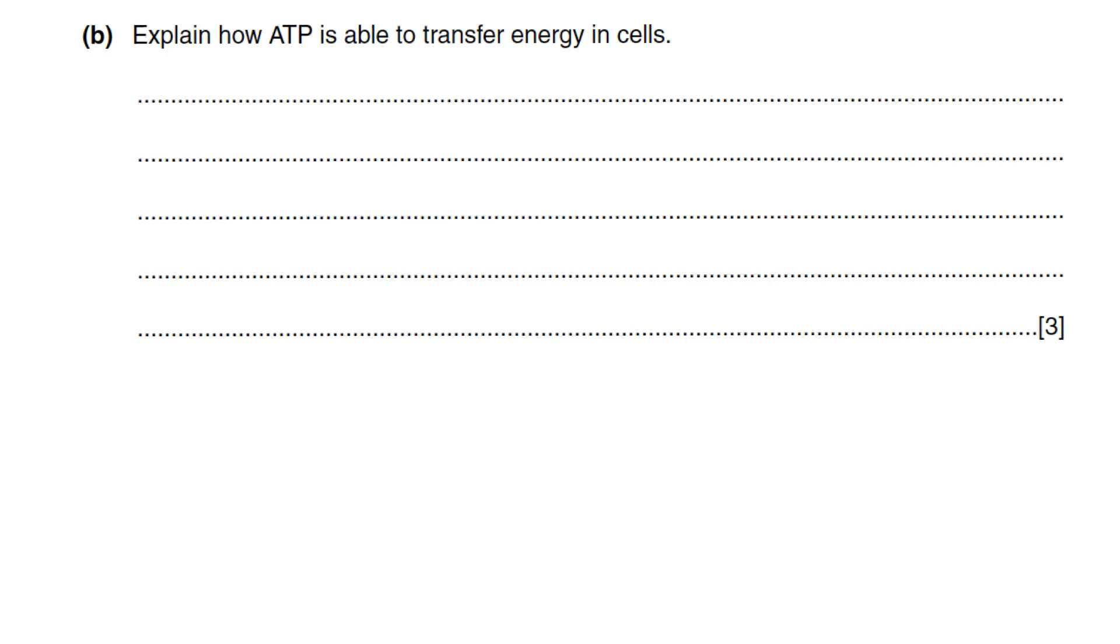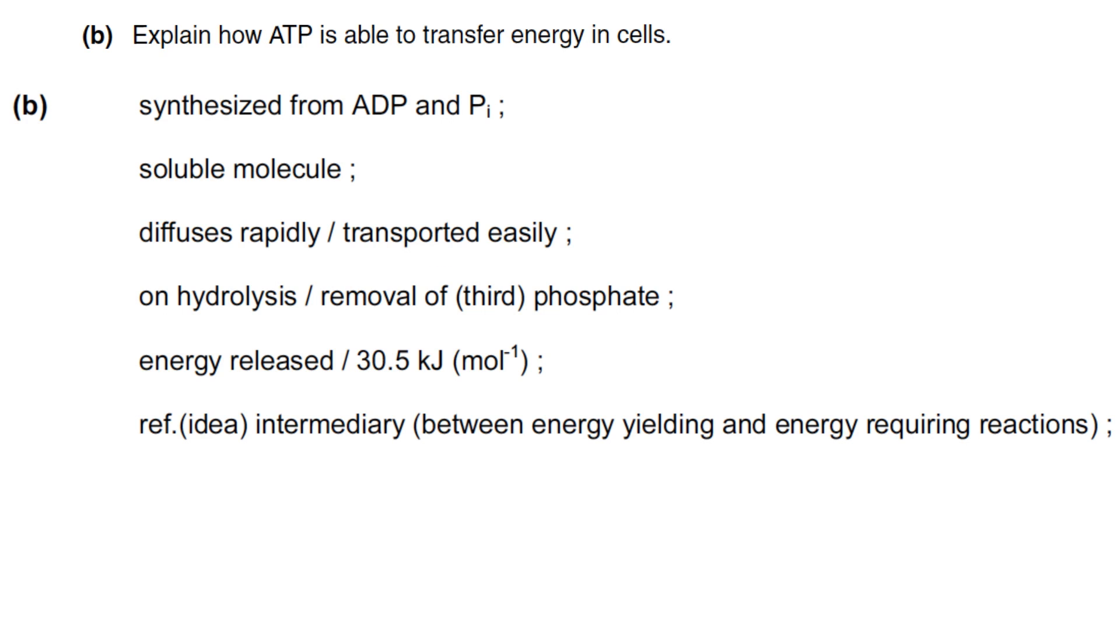Explain how ATP is able to transfer energy in cells, or in other words, what makes ATP a highly suitable molecule. ATP is synthesized from ADP with an organic phosphate. ATP is a soluble molecule, very soluble. It rapidly diffuses, is easily transported, and when one of the phosphates is hydrolyzed or broken down, 30.5 kilojoules of energy is released. Any of these three will suffice.